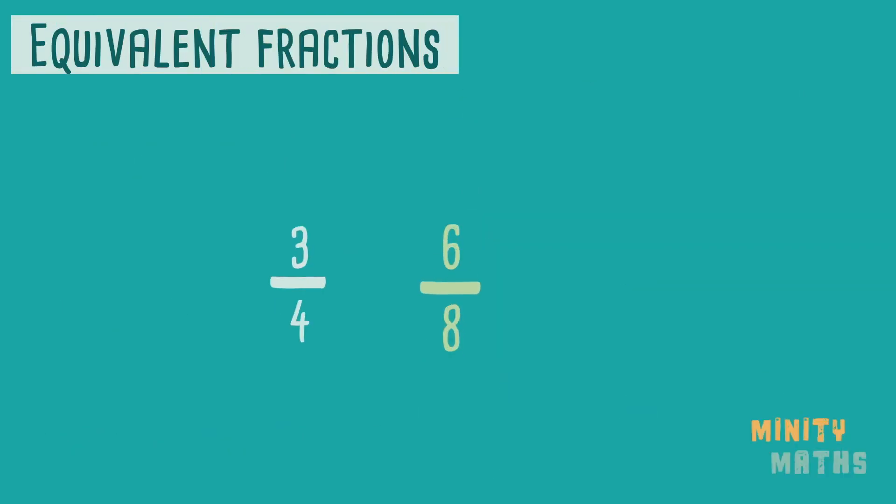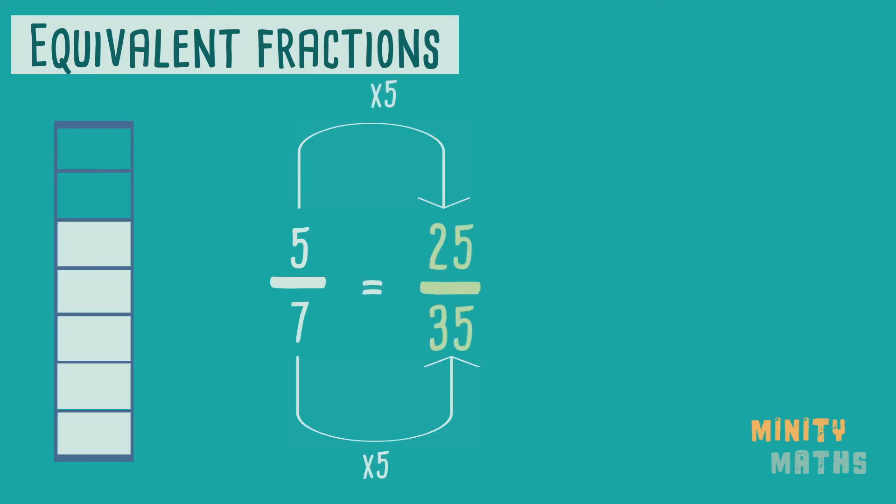To find an equivalent fraction all you have to do is multiply or divide both the numerator and denominator by the same number. Let's have a look at these fractions again. To get from the first fraction to the second we have multiplied both the numerator three and the denominator four by two. This will work for any fraction as long as you do the same to the bottom number as you do to the top number. You can multiply the fraction by any number.